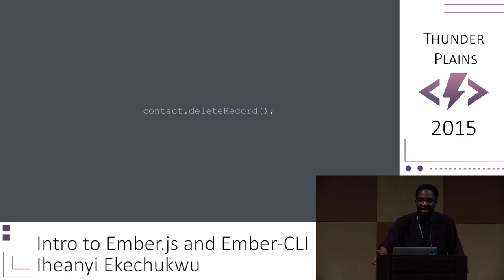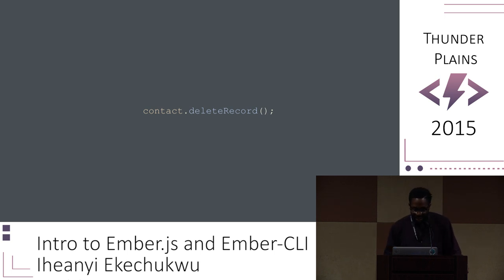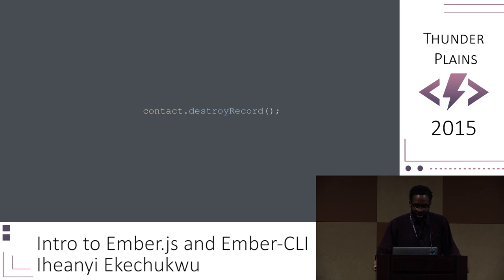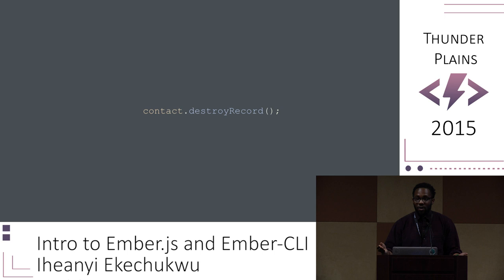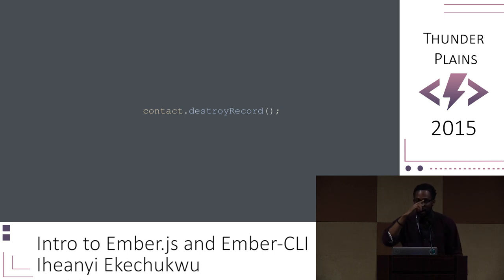Think of deleteRecord as a soft delete — helpful if you want to delete but then roll it back if the user changes their mind. Through these examples, you can see how this reduces the amount of overall code you write, because it extracts those repetitive commands and functions into a very simple data store.